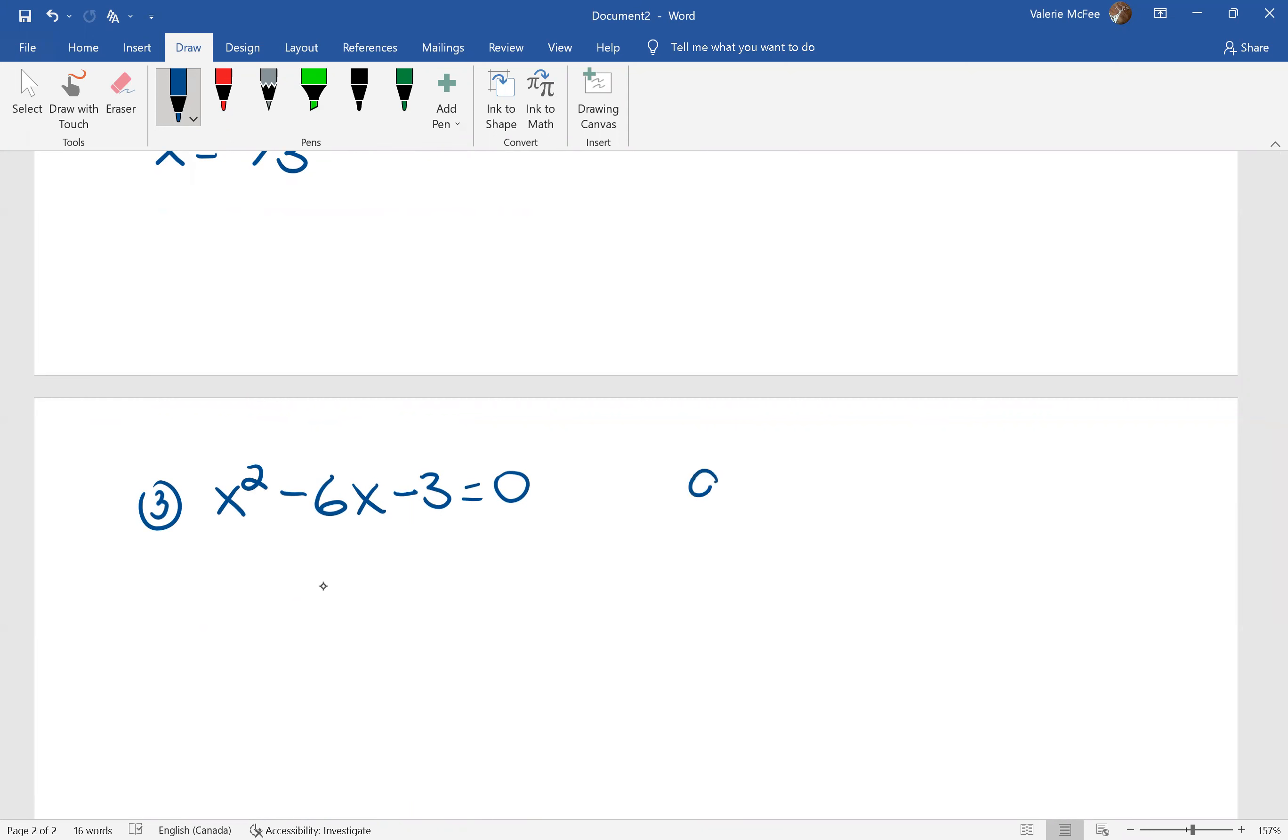Sure. A equals one, B equals negative six, C equals negative three. Write down the formula to make sure you have it memorized. X equals the opposite of B plus or minus the square root of B squared minus four times A times C all over two times A.